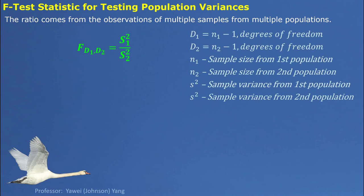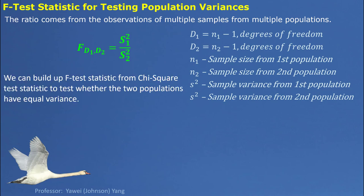It follows an F-distribution with degree of freedom 1 coming from the top sample and degree of freedom 2 coming from the bottom sample. We can imagine it is kind of like the F-test statistic comes from the chi-square test statistic. We use this F-test statistic to test hypotheses about standard deviation or variance.